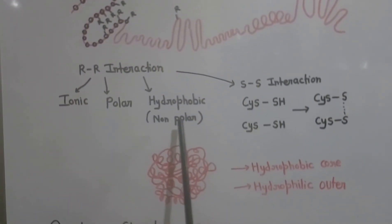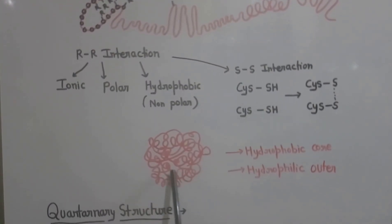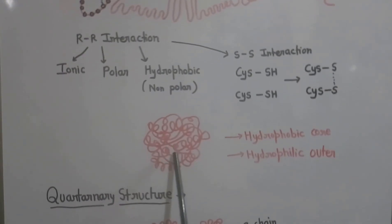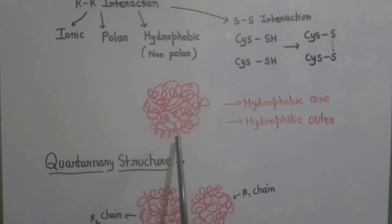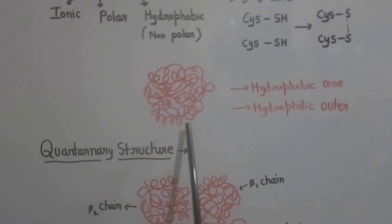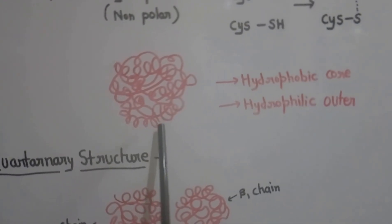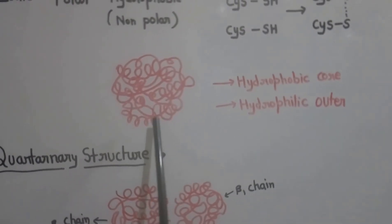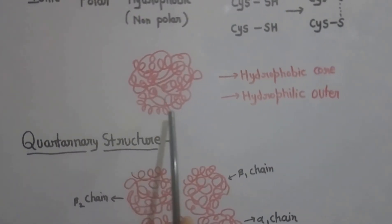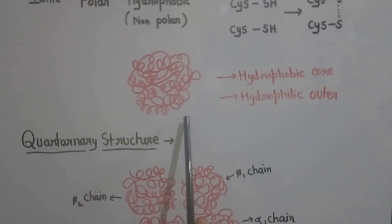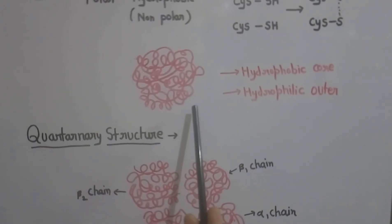Such type of interactions — a large number of such interactions — give rise to the three-dimensional structure of protein. A large number of coiling and interactions give rise to the tertiary structure of protein. There is intensive coiling in this structure, and this structure is unique for each protein. A slight change in the pattern of this structure can give rise to another protein. Another specialty of this structure is that the hydrophobic groups are present at the core and the hydrophilic groups are present on the outside. These hydrophilic groups can interact with water by hydrogen bonding.